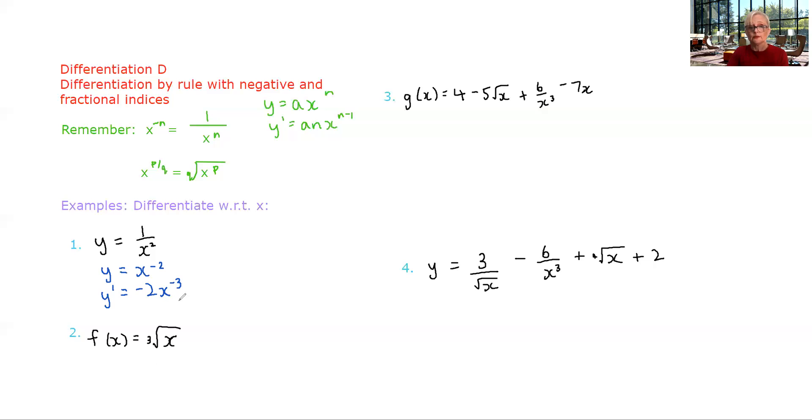So the rule says bring your index down and decrease it by one. Now that's not wrong if we leave it like that, but it doesn't look great and it's not in the same format as we were given our question. So it would be better to put it back into that format. So negative two over x cubed would be better.